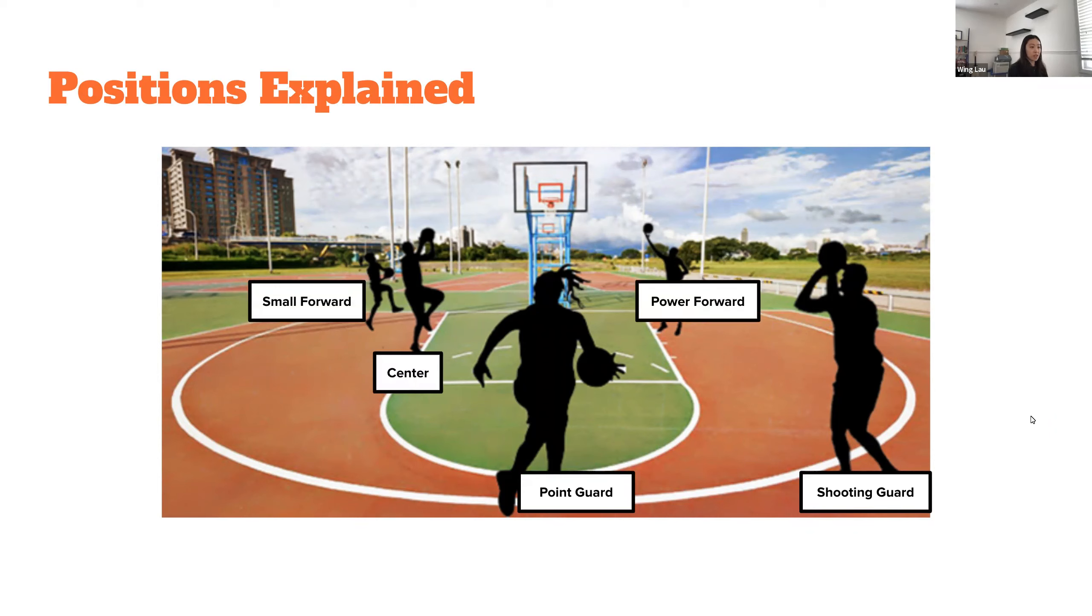Typically, the bigger the number, the bigger the players are, and the closer to the rim they play. The bigger players tend to excel in blocks and rebounds, with the smaller players being more agile and better ball handlers, and they play closer to the perimeter.